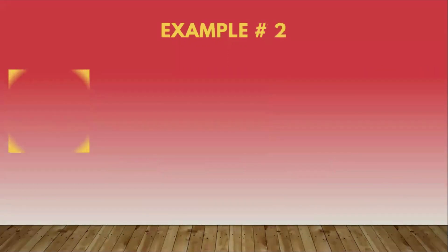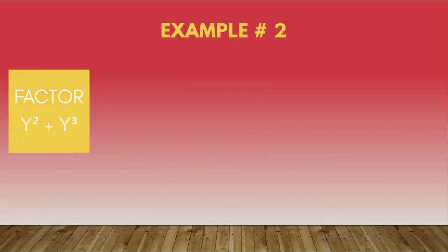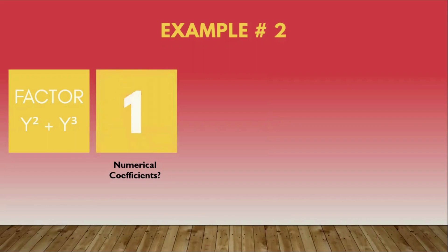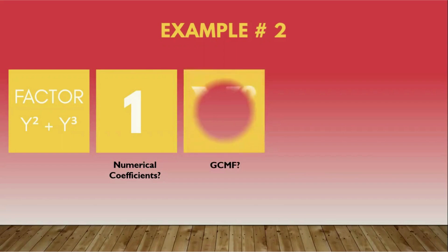For our next example, we have y squared plus y cubed. Let's check if they have numerical coefficients — the numerical coefficients of y squared plus y cubed are both 1. Then check if they have the same variable. Yes, they do — that is y. Since they have the same variable, pick the least exponent that appears in each term. The least exponent is 2, so the GCMF of y squared plus y cubed is y squared.